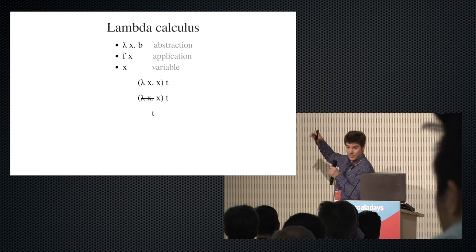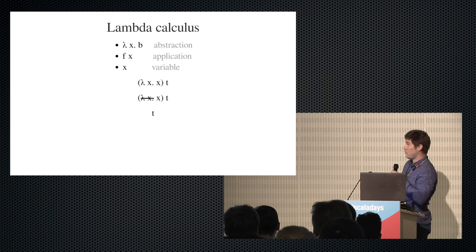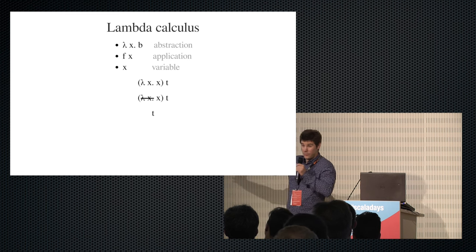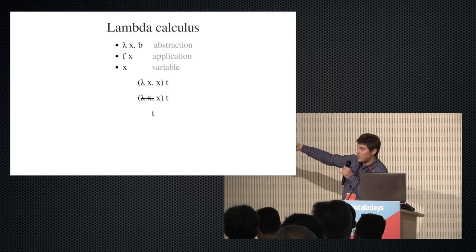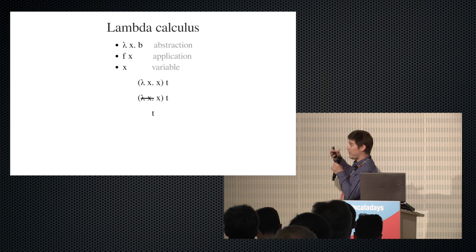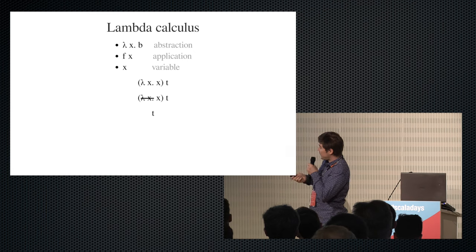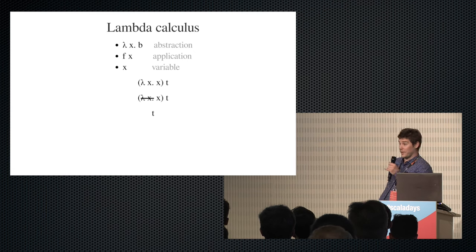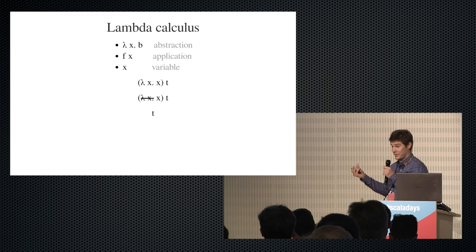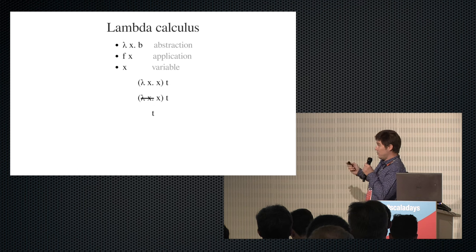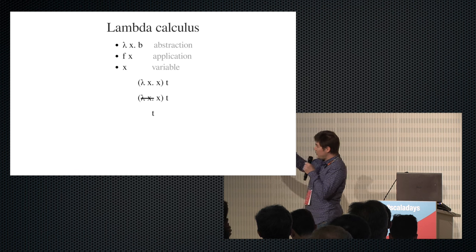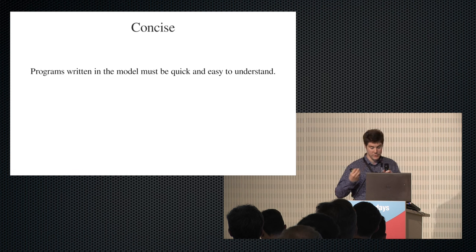How do programs in Lambda Calculus evaluate? When you see a large program, you search for application patterns: if you have a lambda on the left and a value on the right, you apply the lambda to the value. For example, lambda-x.x applied to t — the identity function — you cross out the lambda-x and replace all occurrences of x with t, and you get back t. So Lambda Calculus is sufficiently comprehensible because it's easy to explain and pick up.